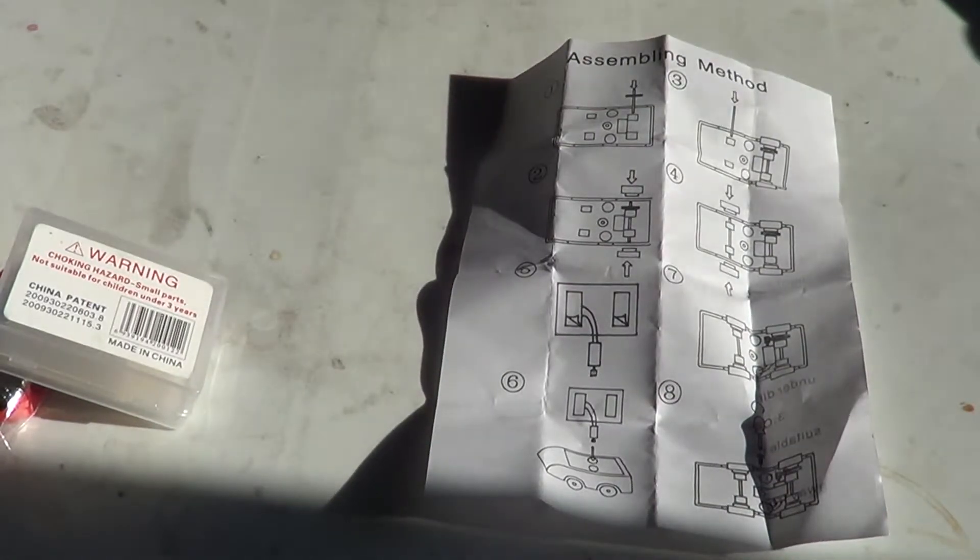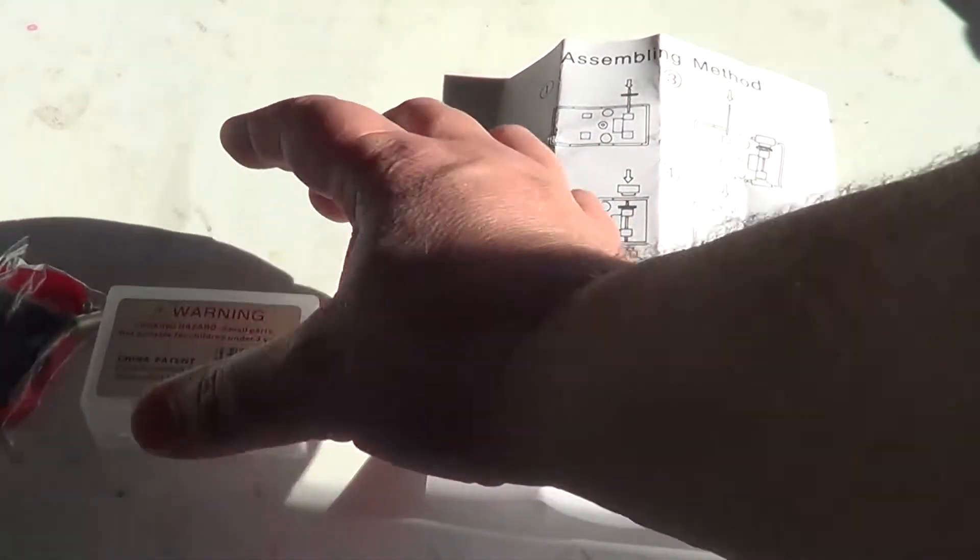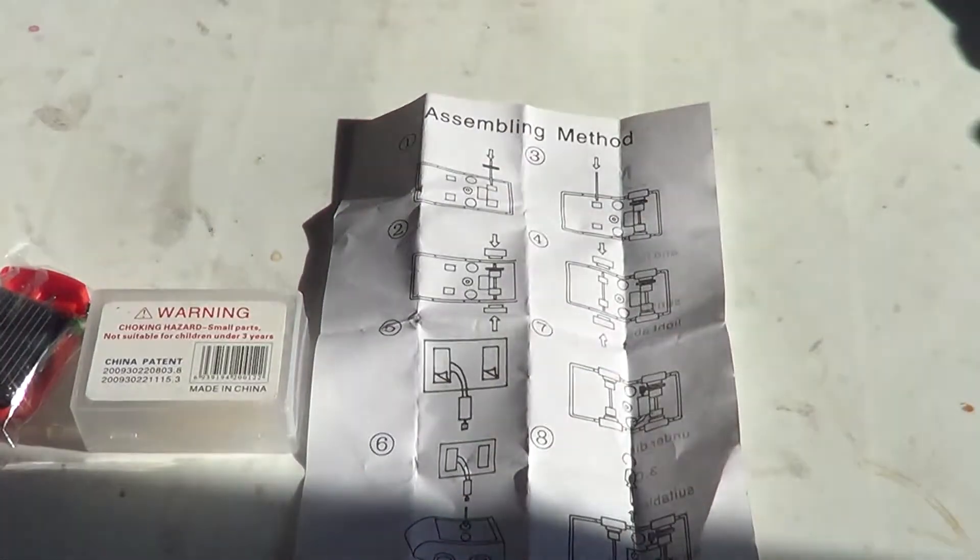So you see here, it's a little kit that you build. It comes in this little box right here, and basically the instruction, this is a little assembly method right here.